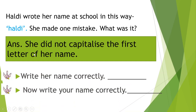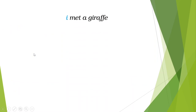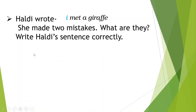She did not capitalize the first letter of her name. Now, write her name correctly. How will you write? Write your name correctly. My name is Sujata, so I will write it like this. I met Ajara — this is the sentence written by Haldi.